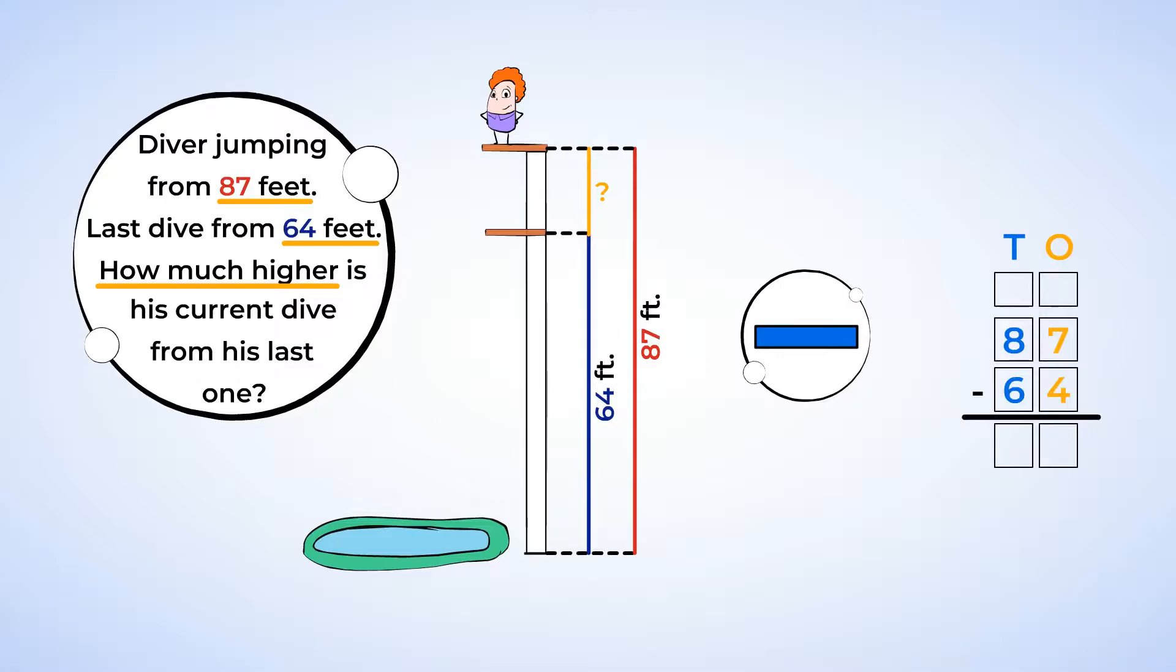First, you need to subtract the ones. So find 7 minus 4, and it's 3. That's right, put a 3 in the ones place. Next up is the tens place. So subtract 8 minus 6, and that leaves us with two tens. So put a 2 in the tens place. That means our answer is 23. 87 minus 64 is 23. So this dive is 23 feet higher than the high diver's last jump. Wow, he's really daring.